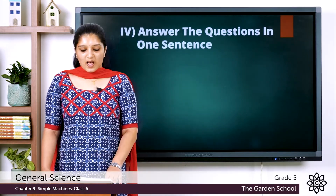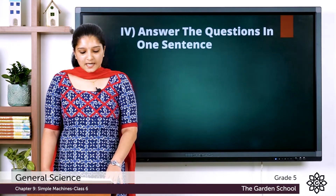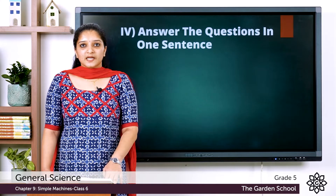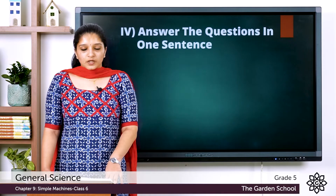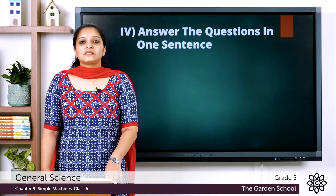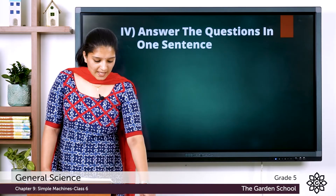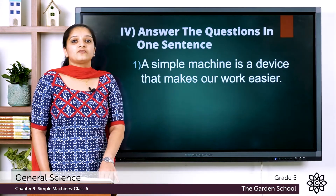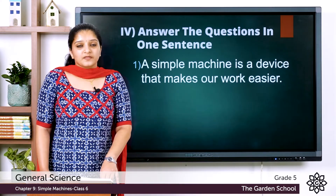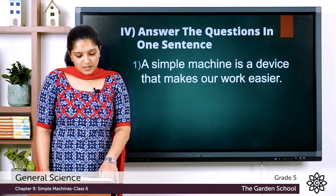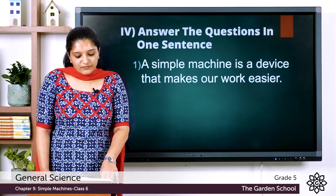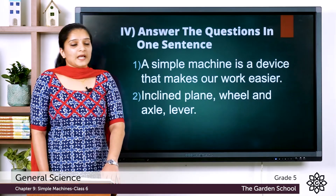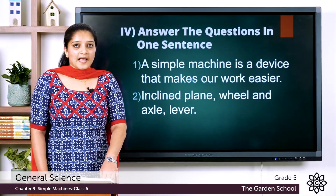The next set of questions is to answer the questions in one sentence. There are four questions given. You have to write the questions and answers in your notebook. The first question: what is a simple machine? The answer is a simple machine is a device that makes our work easier. The second question: list any three different simple machines. The answers are inclined plane, wheel and axle, and lever.